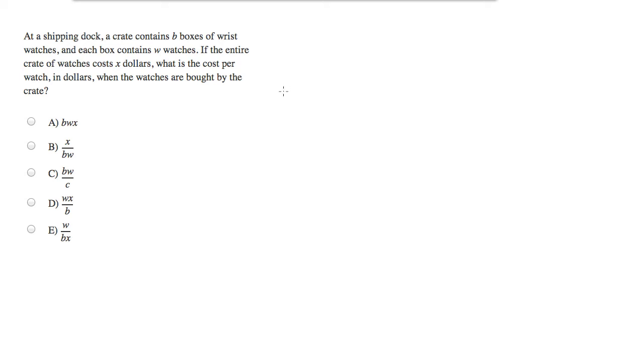This is The Real Tom Rose, and we've been given a problem with lots of variables: B boxes, W watches, X dollars. We've been asked to solve for the cost per watch. Notice that the answer choices have lots of variables, so you should consider plugging in numbers and/or algebra to solve this problem.